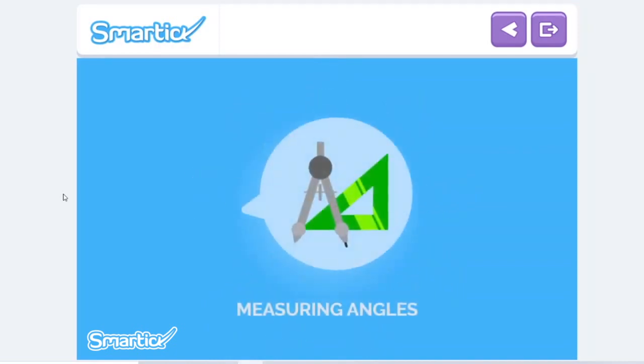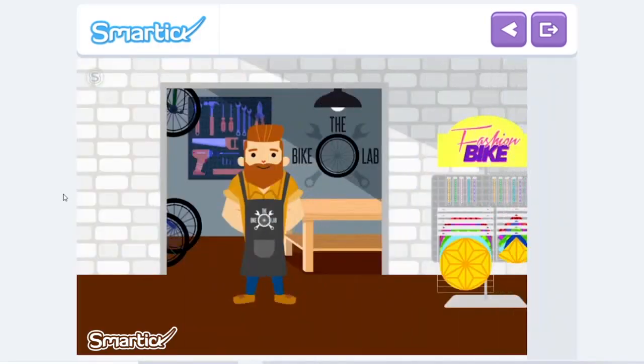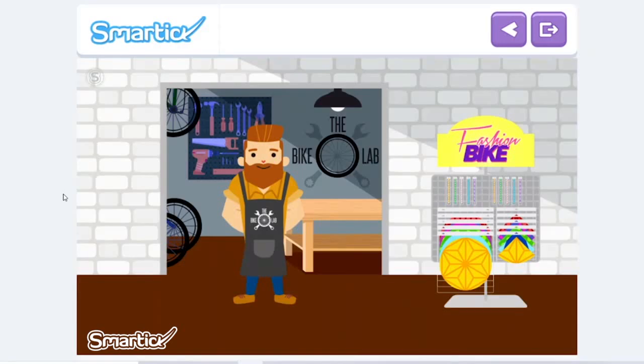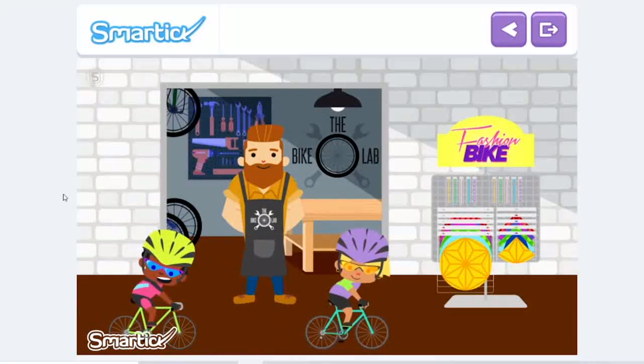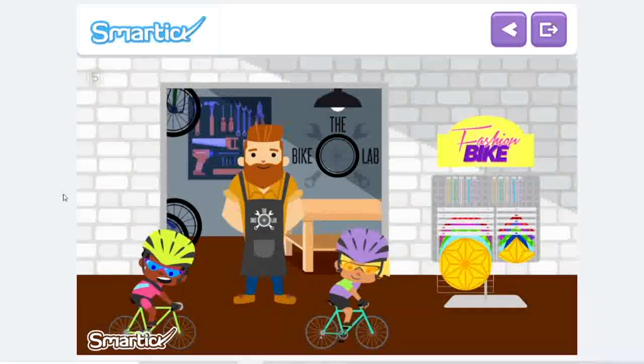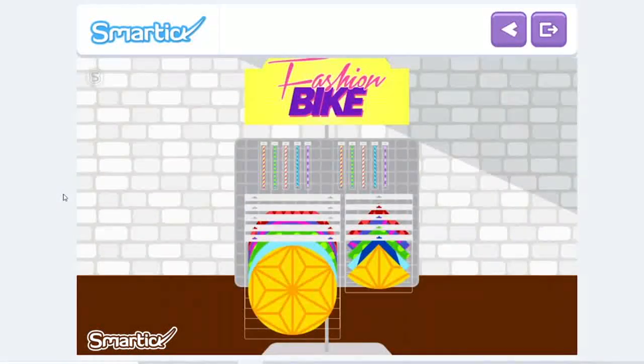Measuring Angles. Eva and Zoe are going to ride their bikes on Sunday. But since they have not used them in a long time, they are going to a bike shop for a tune-up. Inside the shop, they see a display full of decorations for their wheels. They decide to try some and start to decorate their wheels.